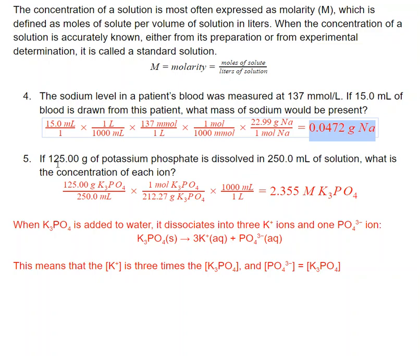In the next one, we want to know the concentration of each ion when we dissolve 125 grams of potassium phosphate into 250 milliliters of solution. I'm going to take that information and change my grams to moles. So right now my units are moles per milliliter. Then I just need to change that milliliter into liters. When we add this K3PO4 into water, it's going to dissociate into three K+ ions and one PO4^3- ion. That means the concentration of K is three times the concentration of K3PO4 and the concentration of these two is equal because they're a one-to-one ratio.